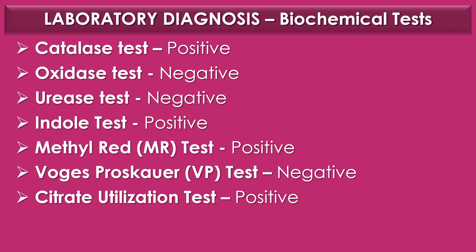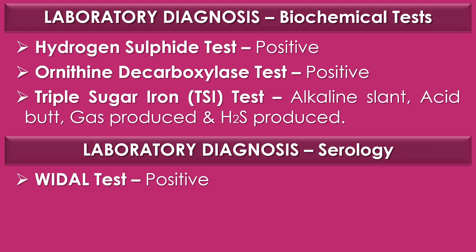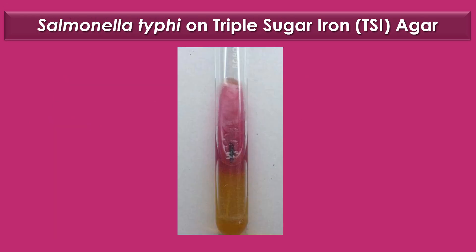For biochemical test-based identification: catalase test positive, oxidase test negative, urease test negative, indole test positive, methyl red (MR) test positive, Voges-Proskauer (VP) test negative, citrate utilization test positive, hydrogen sulfide test positive, ornithine decarboxylase test positive. The TSI (triple sugar iron) test shows alkaline slant, acid butt, gas produced, and H₂S produced. For serological diagnosis, the Widal test is the widely used method for diagnosing typhoid infection caused by Salmonella typhi. The image shows the TSI agar slant of Salmonella typhi with acid butt, alkaline slant, and H₂S production.